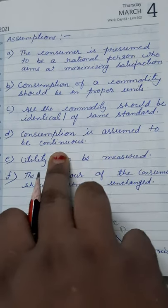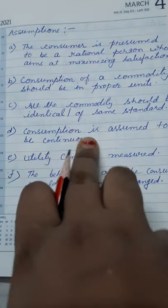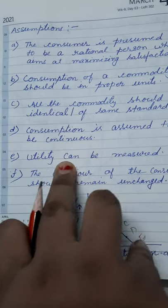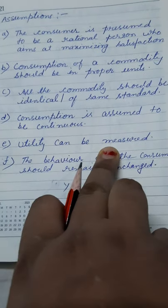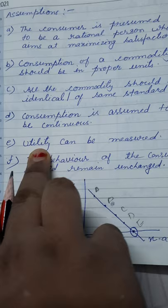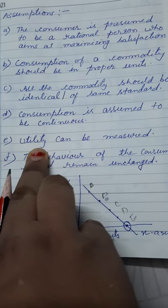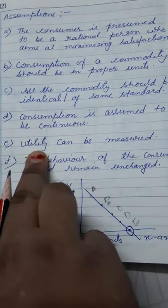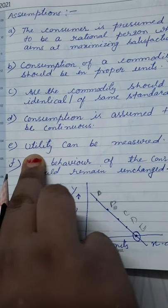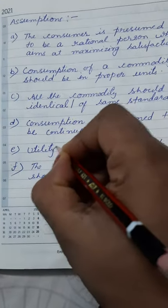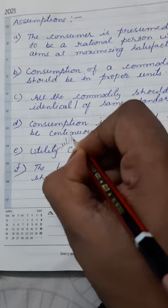Consumption is assumed to be continuous, that is one by one without any time gap lag. Utility can be measured. This is the utility analysis that was propounded by Alfred Marshall. And he said that utility is measured in terms of number and the units of utility is utils. That is U-T-I-L-S, utils. So it can be measured.